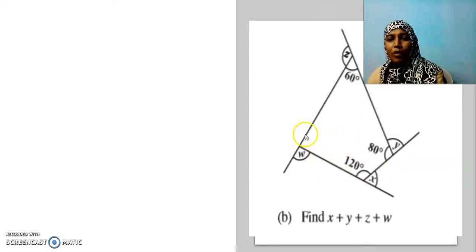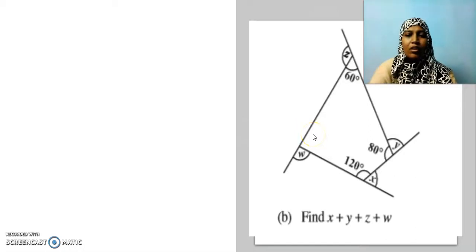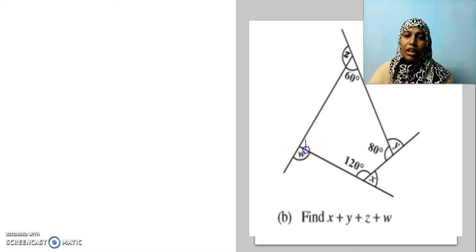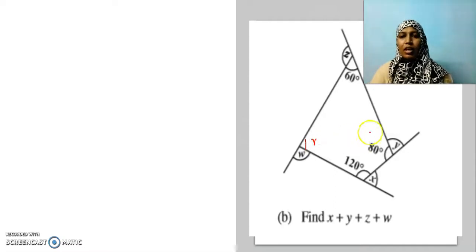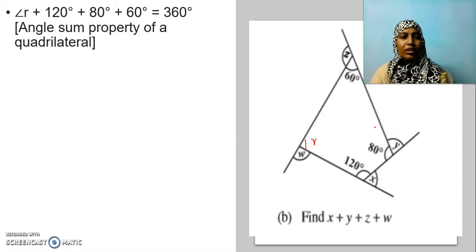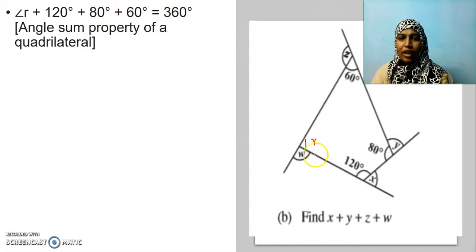Now we are going to name this angle as r. There we named it as a, here we are going to name it as r — you can use any letter for that. So angle r is equal to r plus, if I add all these: r, 120, 80 and 60. If I add them, the sum of all the angles in a quadrilateral is equal to what? 360.